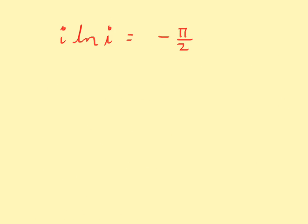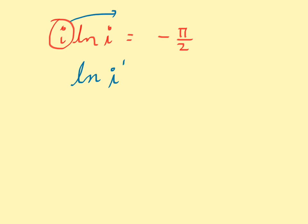Now that we have i · ln(i) equal to negative π/2, let's use our properties of logs. The property says that a product multiplied by ln — specifically a times ln(a) — can be rewritten as the ln of the argument raised to that exponent. So we can rewrite this as ln of i raised to the exponent i is equal to negative π/2.